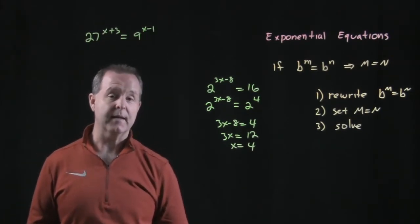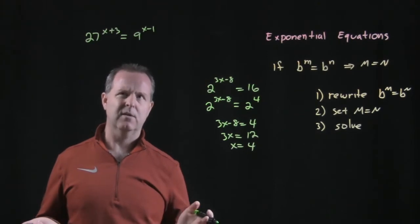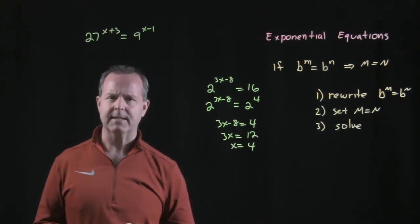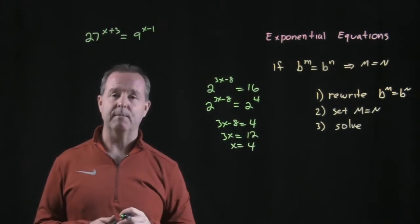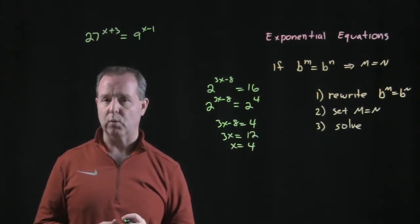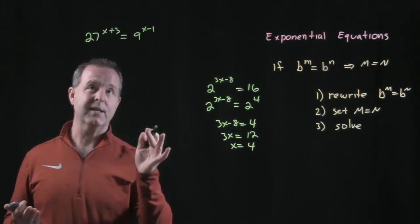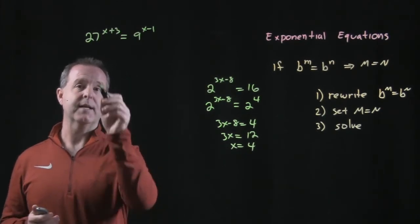First thing we need to do is rewrite these so they have the same base. Can they both be written in base 9? This is where our understanding of different bases comes in. Both of these numbers are in base 3 world. 27 is 3 cubed, so let's rewrite that as 3 cubed.